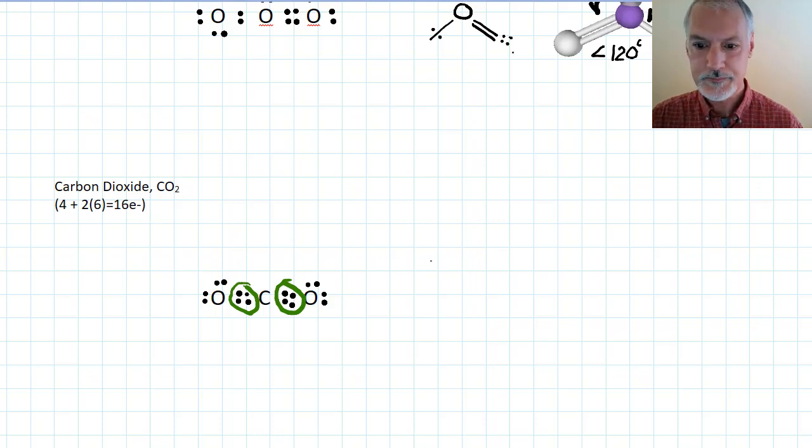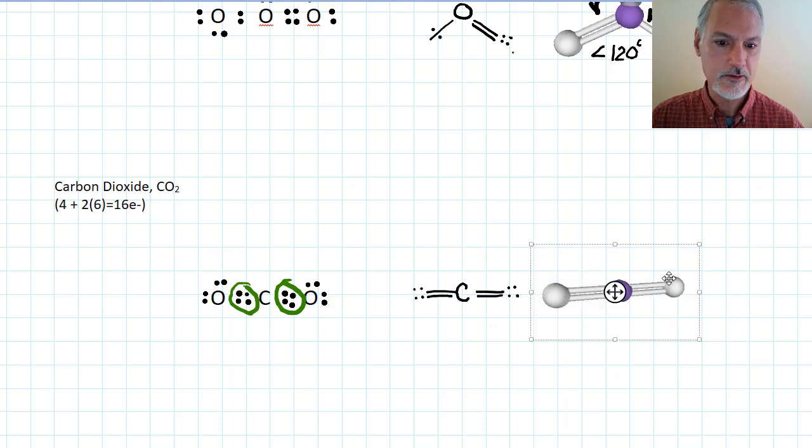So carbon is going to have essentially two domains around it. There's four electrons in that domain and four electrons in that particular domain. It's going to make a linear shape. Both of these ends are hooked up to other atoms. And so it would tend to form the linear shape that we associate with the carbon dioxide molecule.